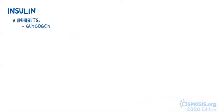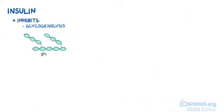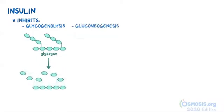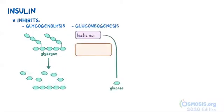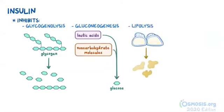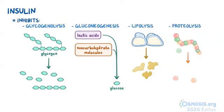On the flip side, insulin inhibits glycogenolysis, which stands for the breakdown of glycogen, and gluconeogenesis, which is glucose production from lactic acids and non-carbohydrate molecules. Finally, insulin inhibits lipolysis, the breakdown of lipids, and proteolysis, the breakdown of proteins.